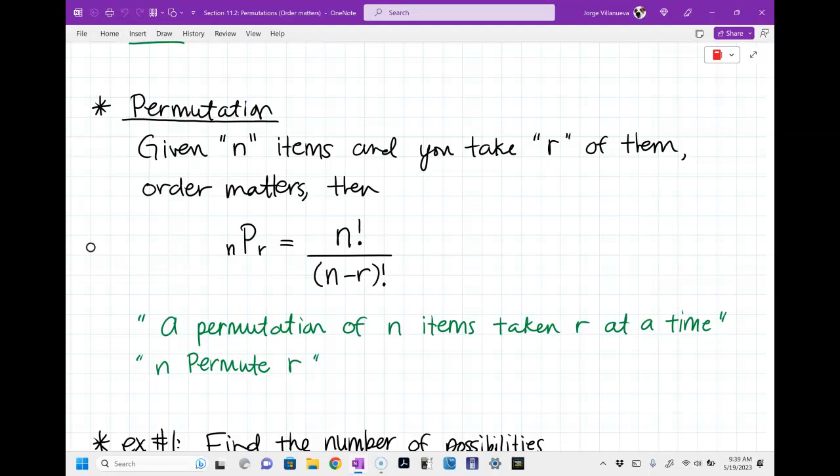Any problem where the order matters is considered a permutation. Any problem where the order doesn't matter, which is going to happen on Monday, that's called a combination. And we'll talk about that in a little bit.